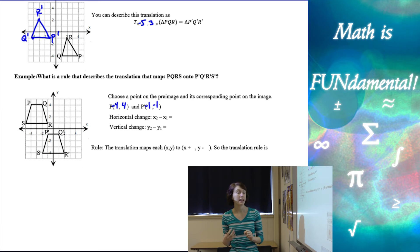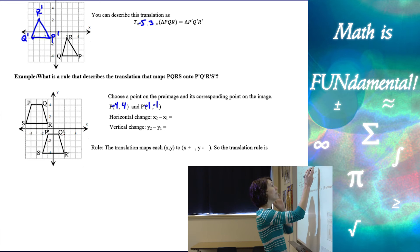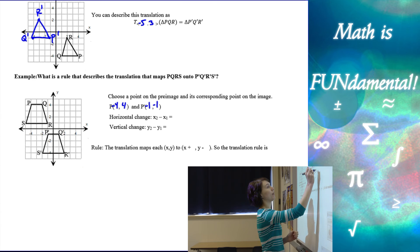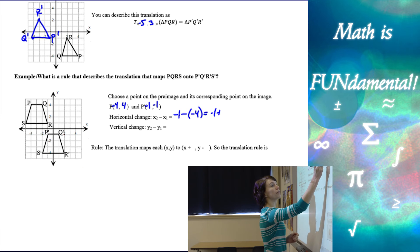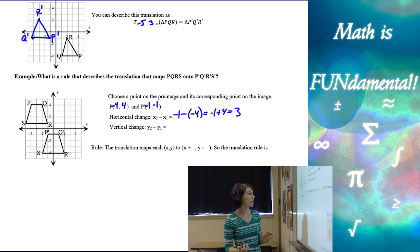So figure out what was the horizontal change between negative 4 and negative 1. Well, negative 4 minus negative 1 is a horizontal change of 3. So x2 is always our image point. So negative 1 minus negative 4 is negative 1 plus 4, which is 3. Another way to figure it out is to look at your graph and realize that from P to P prime we moved 3 to the right. So that's a positive 3.